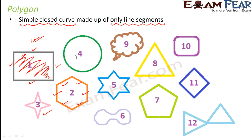Number four — this is a simple curve and a closed curve, but is it made up of line segments? No. So that means it is not a polygon. When you look at number nine, here also you see that it is a closed curve, but it is not a polygon because it is not made up of line segments. In this way, you can decide which of these 12 curves are polygons and which are not.